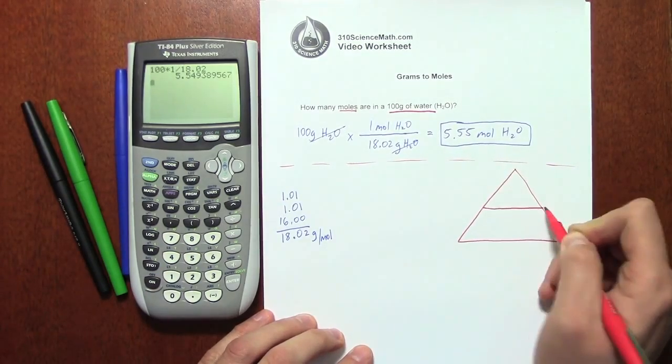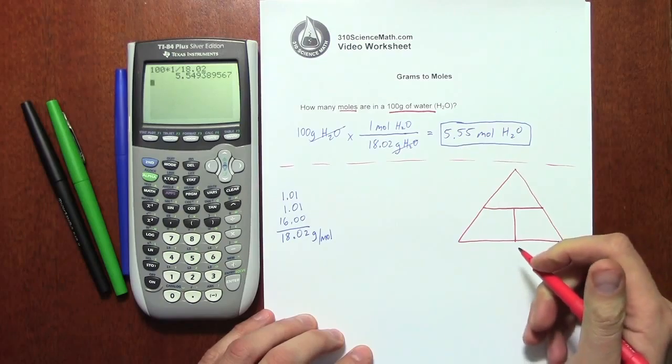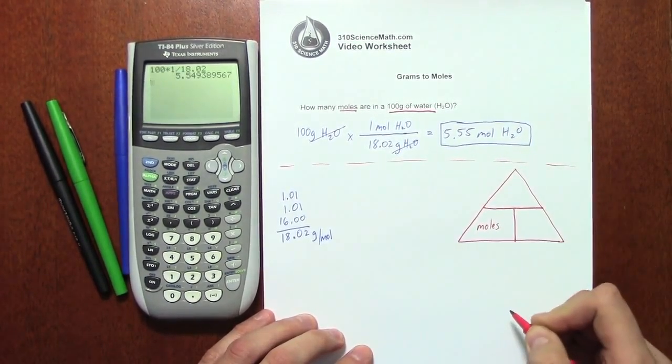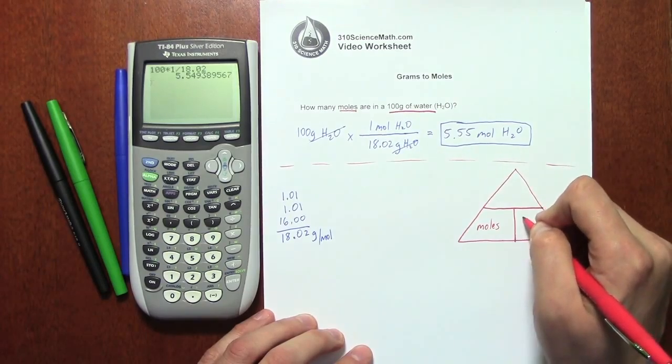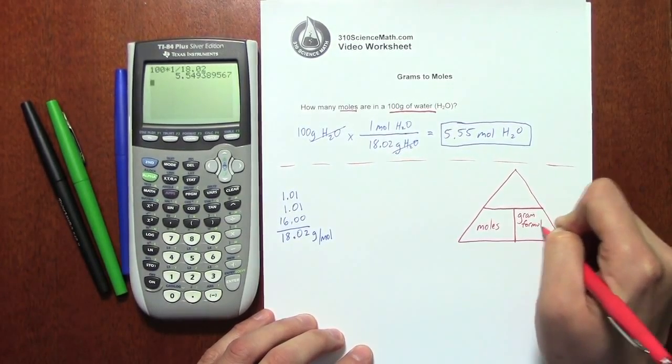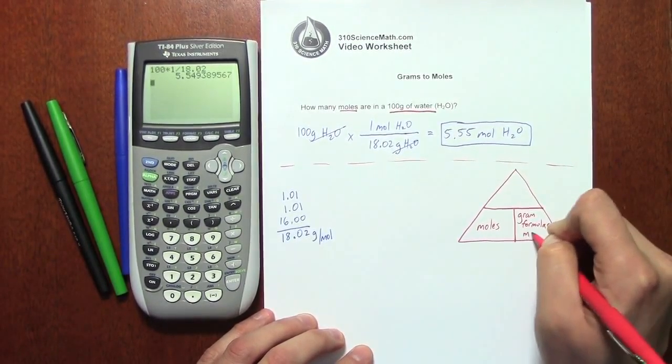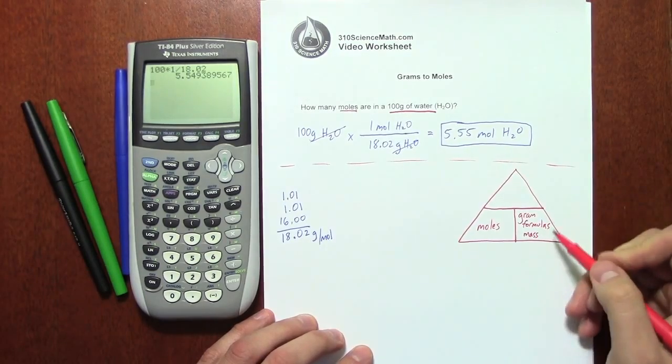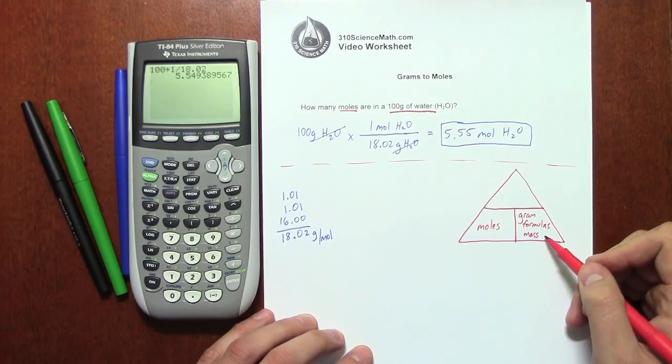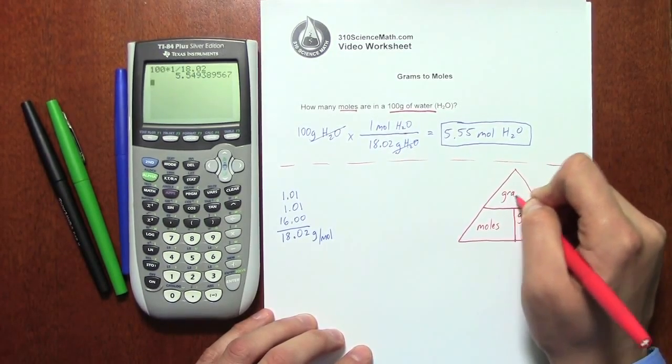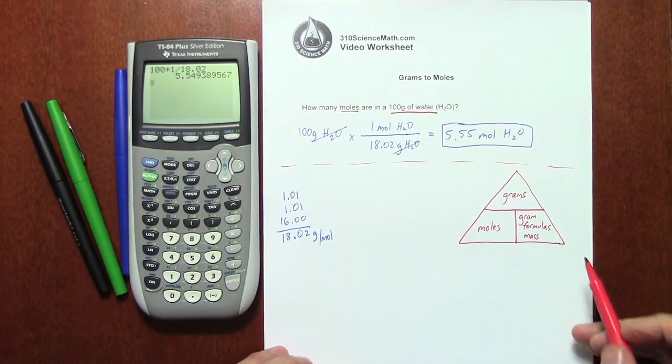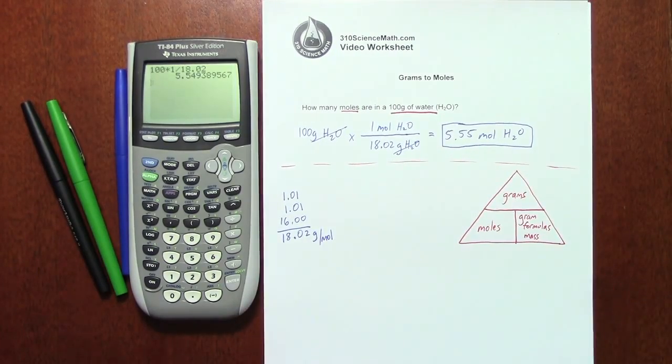So the triangle you divide up into three sections. The first section, which you have down here, is moles. The next section that you have here is called gram formula mass. Now, some teachers may say gram formula weight. Some teachers may say molar mass. That's all the same thing. Now at the top, I'm going to write grams. And so this is the basic layout for setting up this particular magic triangle.